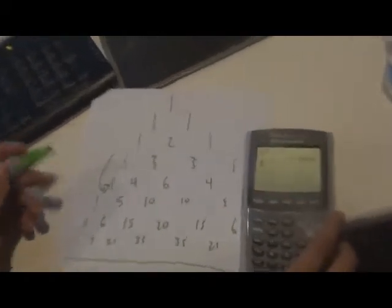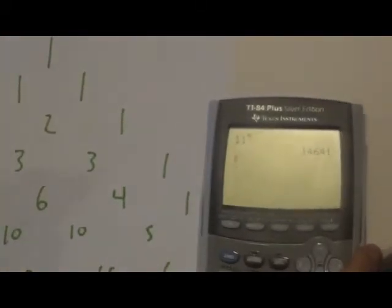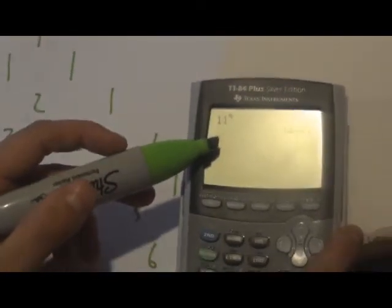As you can see, the numbers are the same: 1, 4, 6, 4, 1. And 11 to the fourth is 1, 4, 6, 4, 1.